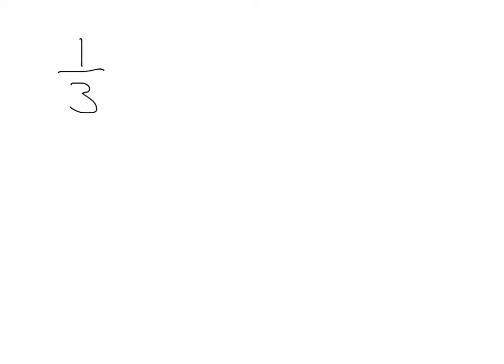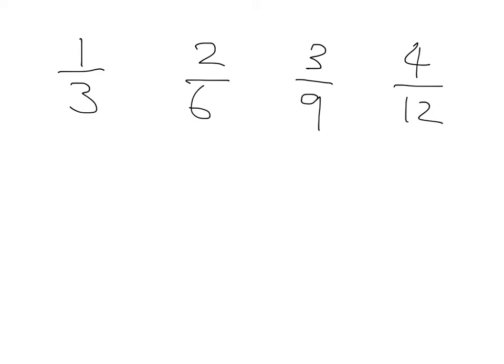We have seen that one third, two sixths, three ninths, and four twelfths are all equal to each other. In other words, they represent exactly the same number. Can we notice how they are related to each other?